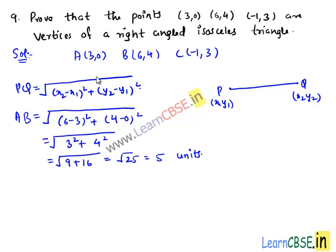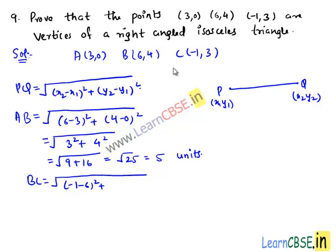Now let us find the length BC. BC equals under root of (-1 minus 6) whole square plus (3 minus 4) whole square, that equals under root of (-7) square plus (-1) square.